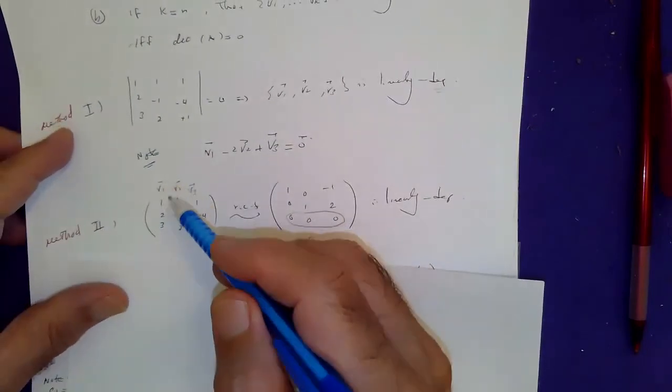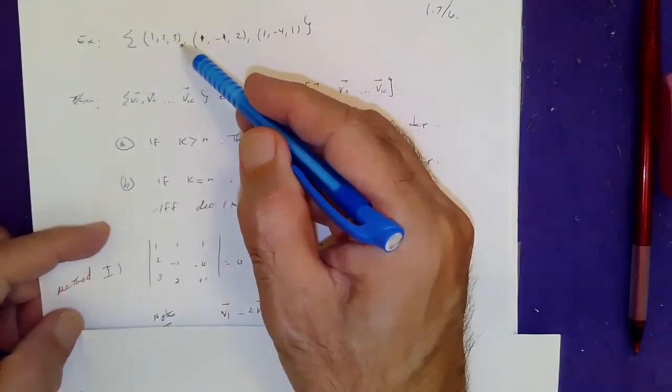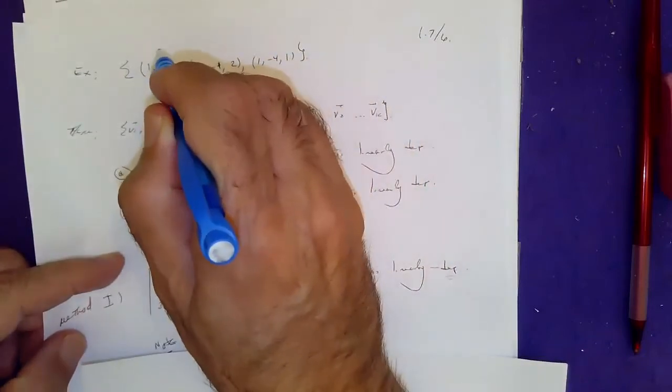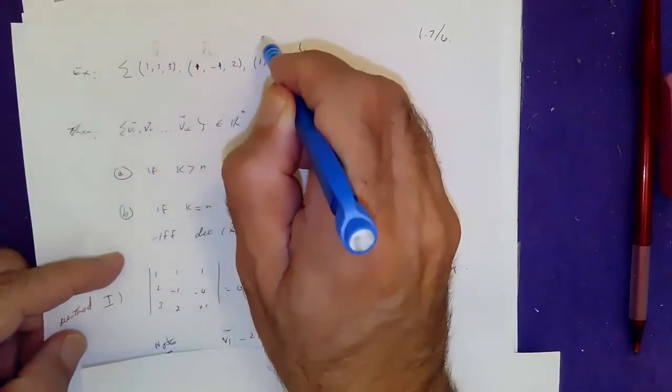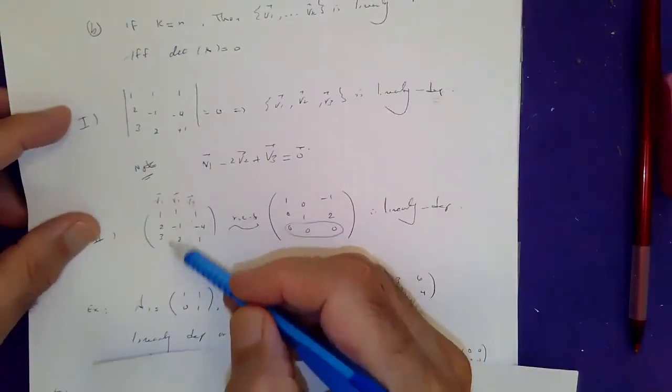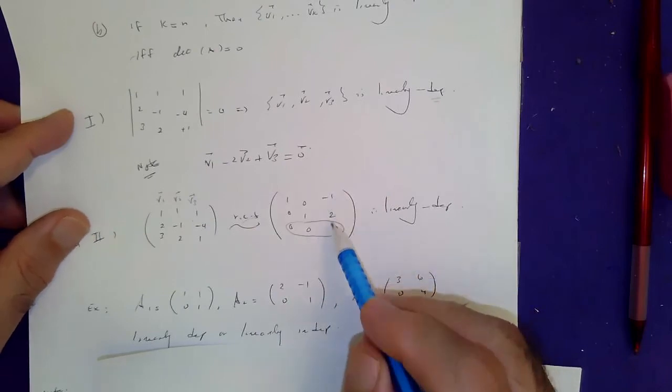Remember, you write the components of vector v1, v2, and v3 column-wise in a matrix. Put that in row echelon form and see what you have. But check this out.